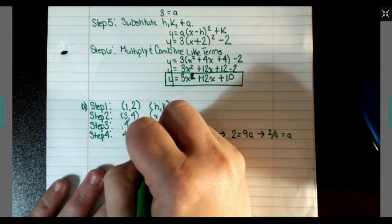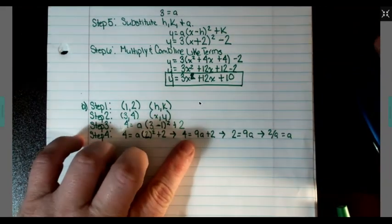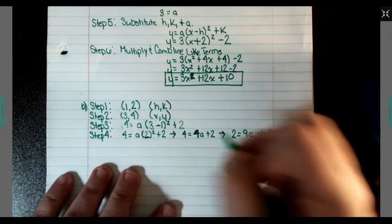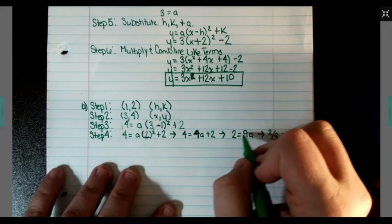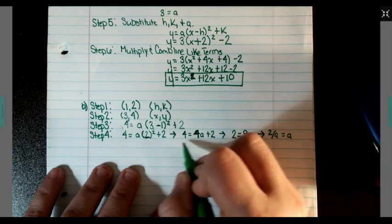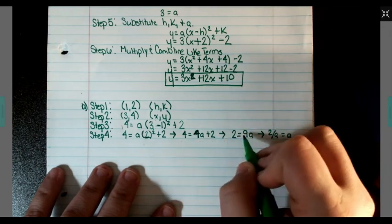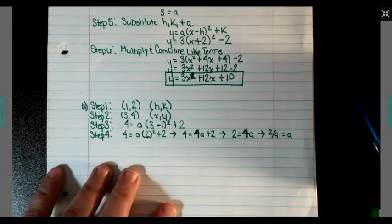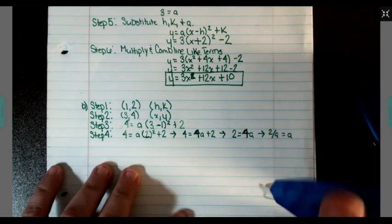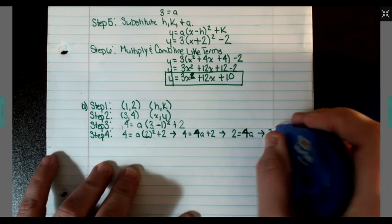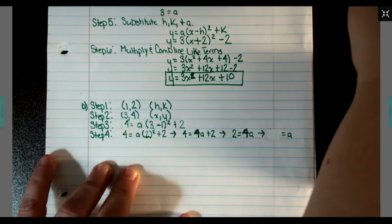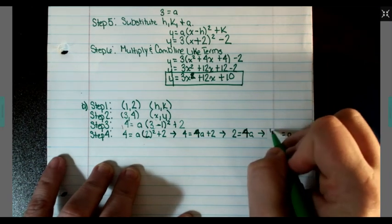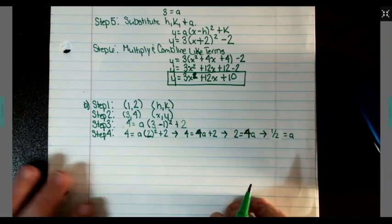So we have 2 squared, which is no longer 9. It is 4. When we subtract 2, we get 2 equals 4A. And 2 divided by 4 is 1 half. Sorry about all those changes we had to make there. We should have caught that earlier.